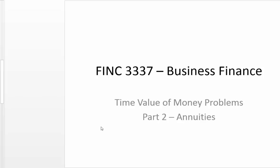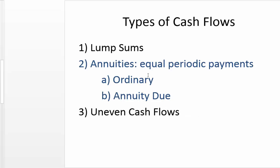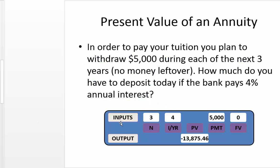A second type of cash flows are annuities, in which we have constant periodic payments. We're going to focus on ordinary annuities, where each payment takes place at the end of each period. We will solve first for the present value of an annuity. Suppose that you want to withdraw five thousand dollars for each of the next three years to pay for tuition, with nothing left over — your plan is to deplete your funds.